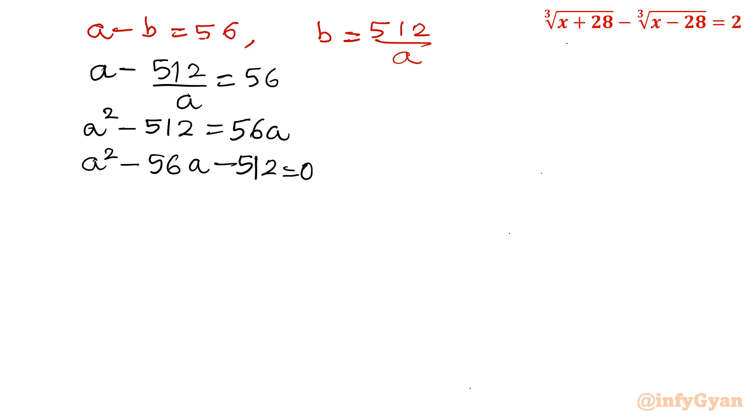Now we know that 512 is 8 cube, or in other words 8 times 8 times 8. So let me write 64 into 8. Now see 64 minus 8 is 56. Now we can split the middle term. You can use the quadratic formula also. So I am going to show you the splitting of middle term.